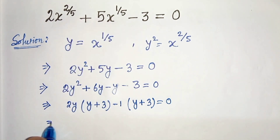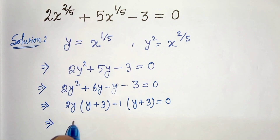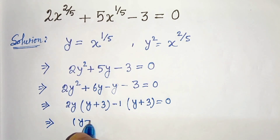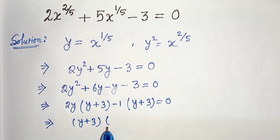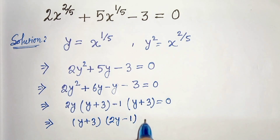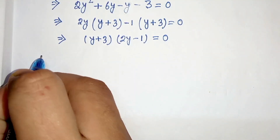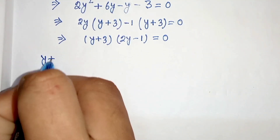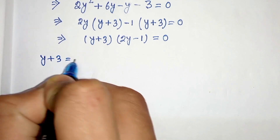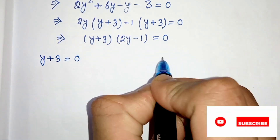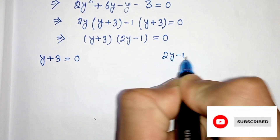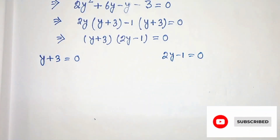In the next step we can take common y plus 3, so we will be left with 2y minus 1 equals to 0. From this we can write: y plus 3 equals to 0 and 2y minus 1 equals to 0.